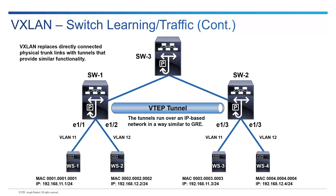This tunnel is very similar to what you use with GRE — you have a tunnel source and tunnel destination. But instead of the trunk link, now there's a tunnel doing the same exact thing: sending traffic between Layer 2 domains in VXLAN. In VXLAN, we call these VTEPs — VXLAN Tunnel Endpoints. Sometimes you'll hear 'virtual tunnel endpoint,' but technically it's VXLAN Tunnel Endpoint. The switches terminating the tunnel are called VTEPs, and this tunnel transports Layer 2 traffic from one switch to another.